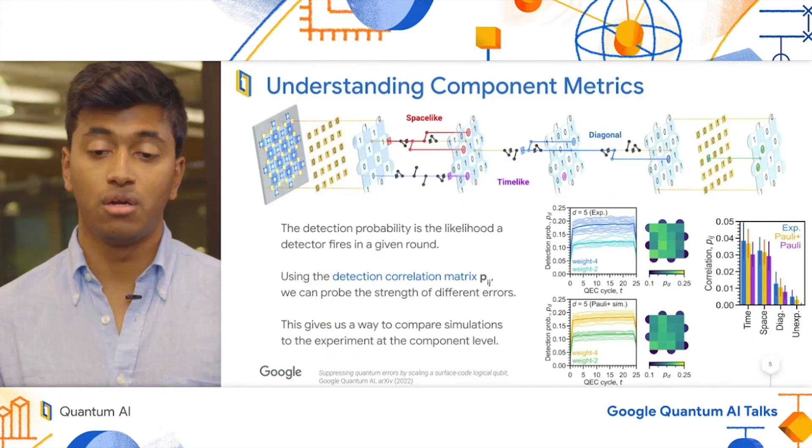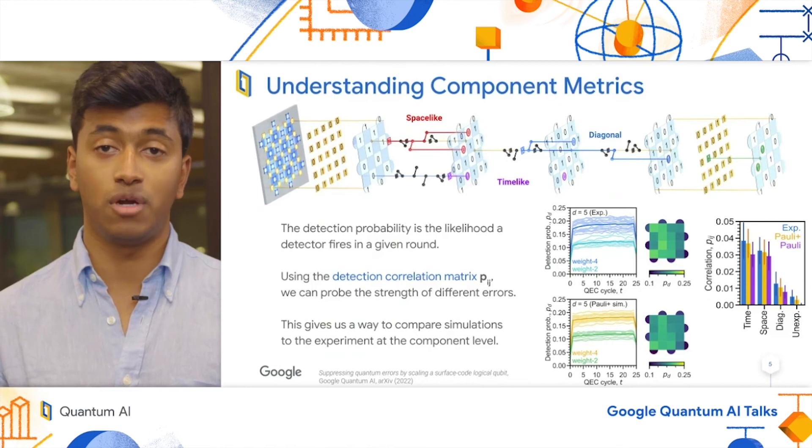On the right, we have a bar chart, where we compared the likelihoods of all these edge probabilities according to the experiment, the Pauli-plus simulation, and the Pauli-simulation.